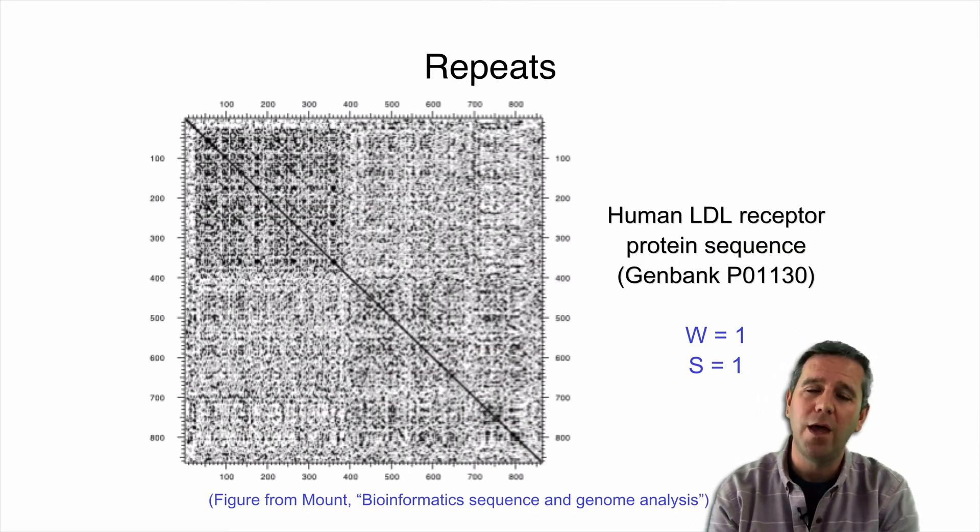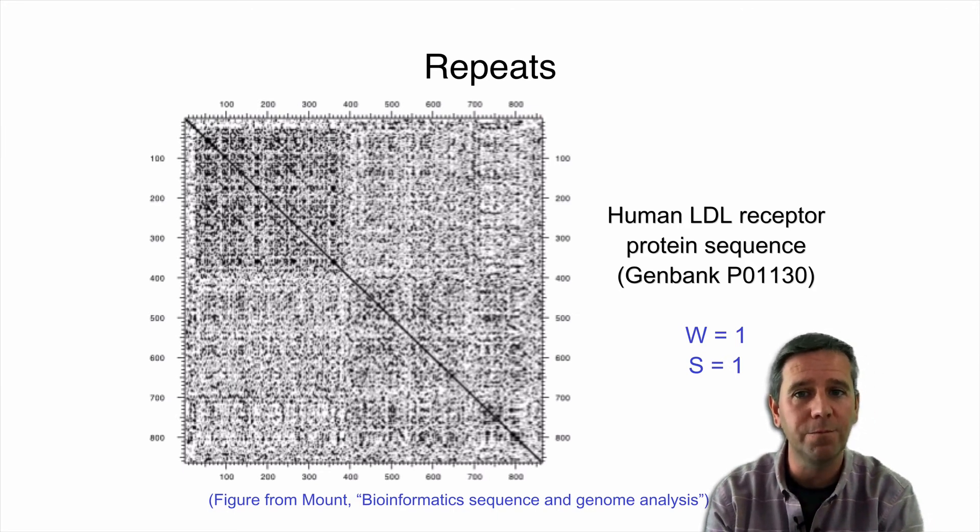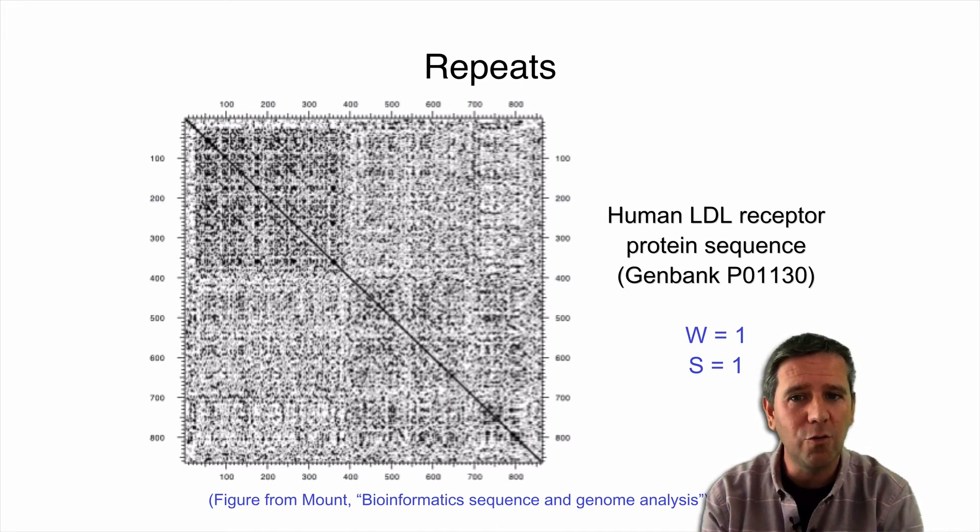So this is an example of human LDL protein sequence, and it's the same sequence on both sides of our little dot plot table here. So you can maybe see here that there's a straight dark line that runs from the top corner to the bottom corner. That's expected. That's our diagonal because, you know, it's the same sequence on both sides. We would expect that pattern there, but it's also really noisy. There are dots everywhere.